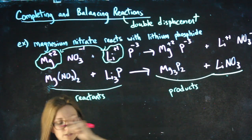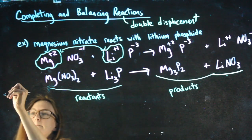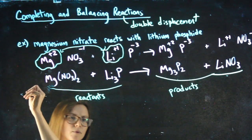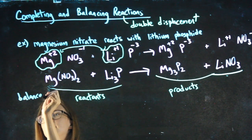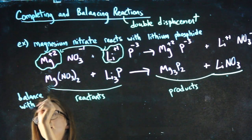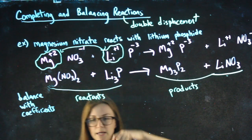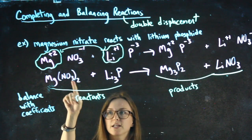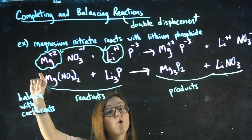And I balance with coefficients. Let me write that out for you. I want to make sure I stay in the screen. Balance with coefficients, meaning big numbers. When I say big numbers, I mean like literally bigger on your paper, not a subscript that's a little number, but a big number that goes out front of the whole compound.